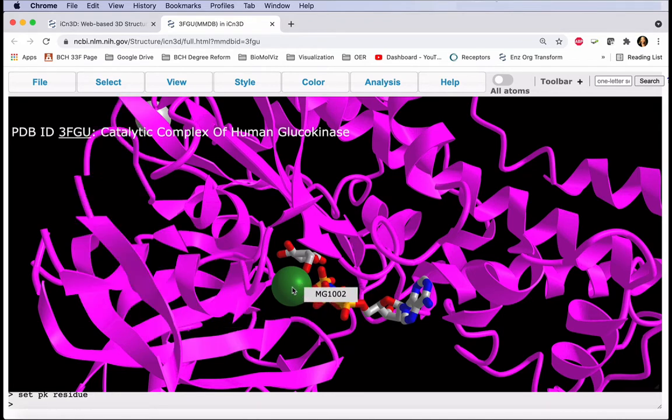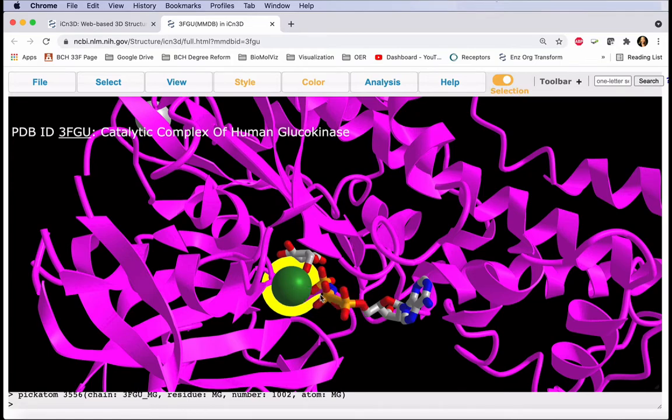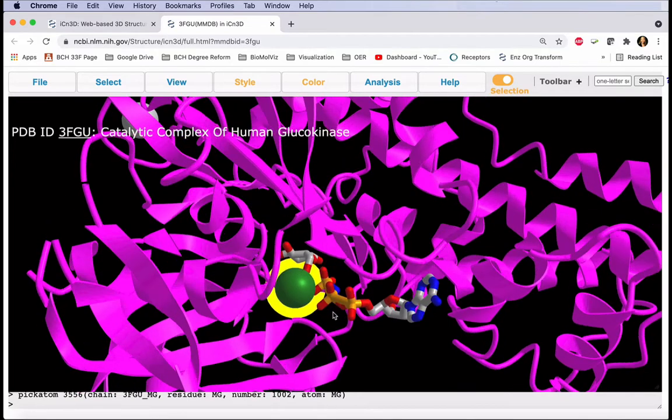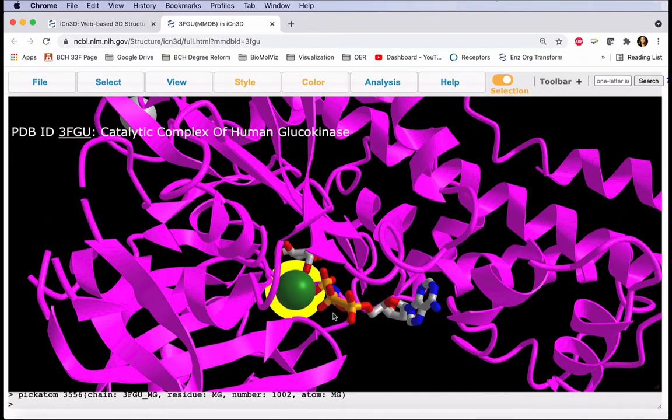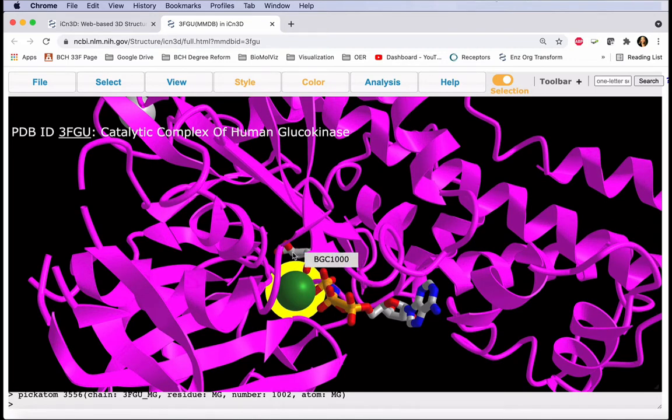Now I'm going to, on a Mac, option click on my magnesium. I may need to reposition this to click on my other residues. And now holding down control, I'll click on this residue.